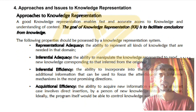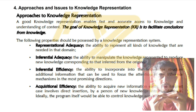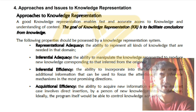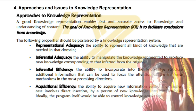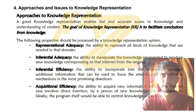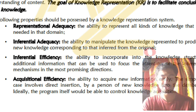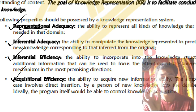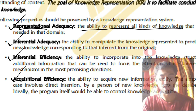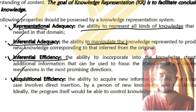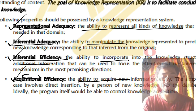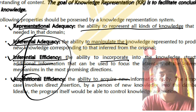The fourth super important question is: approaches and issues in knowledge representation. Before knowing the approaches, you need to know the characteristics. There are four: representational adequacy — the ability to represent all kinds of knowledge; inferential adequacy — the ability to manipulate the language; inferential efficiency — incorporating additional information into the knowledge structure; and acquisitional efficiency — the ability to acquire new information easily.